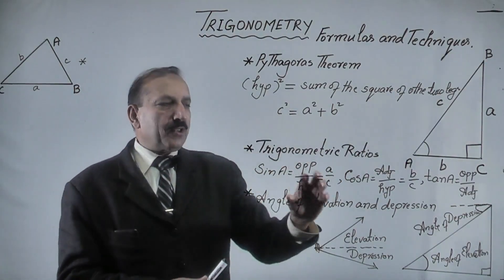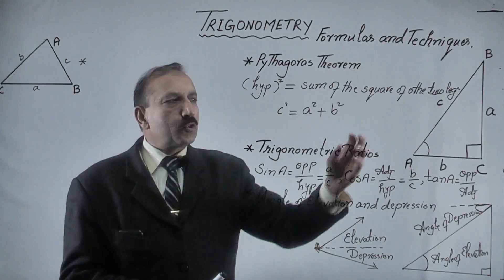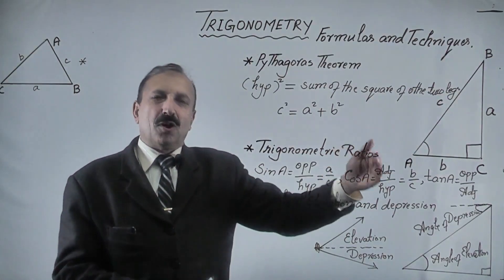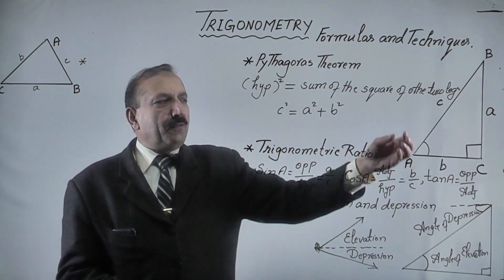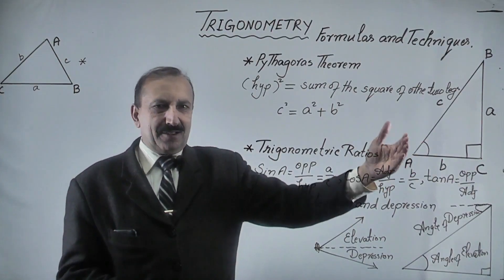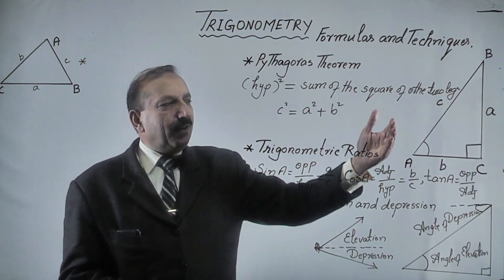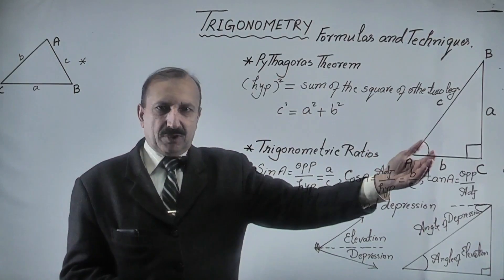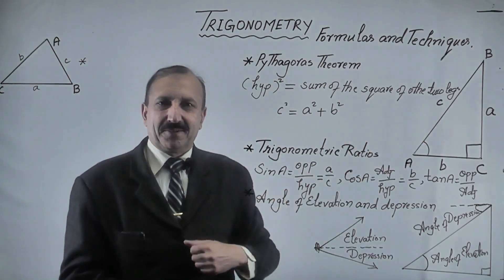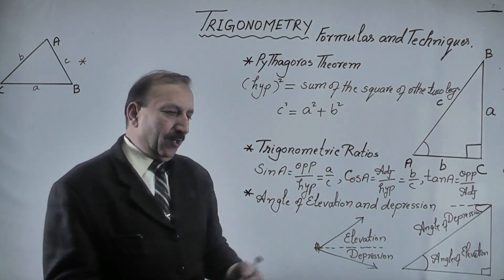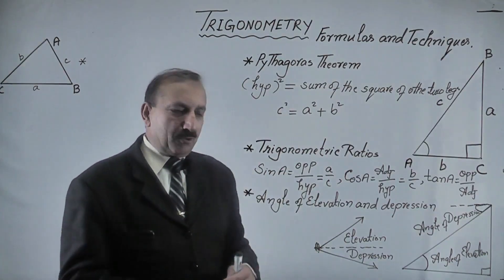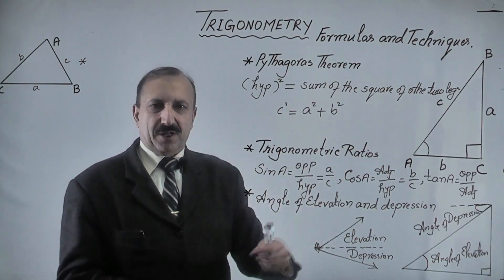The function of these trigonometric ratios is to solve any right-angle triangle, meaning finding the values of unknown sides and angles which are not given, with the help of the given sides and angles. The next concept is angle of elevation and angle of depression, which appear most often in problems.